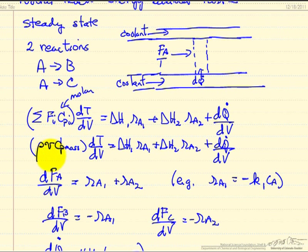We could also write this in terms of a mass heat capacity and a mass flow rate, so density times a volumetric flow rate. So rho is density, small v is volumetric flow rate.